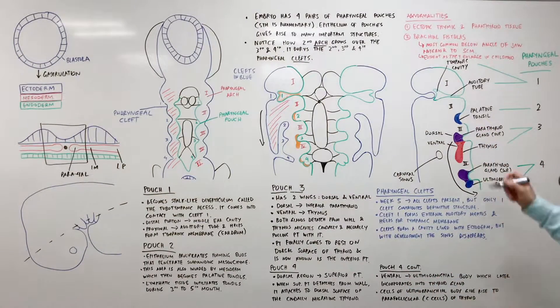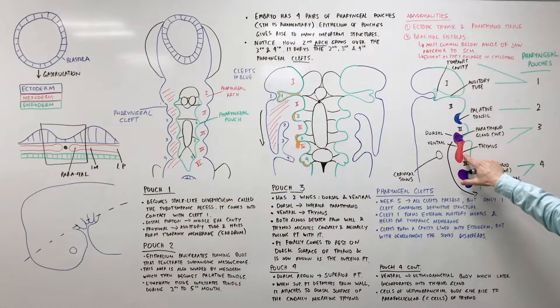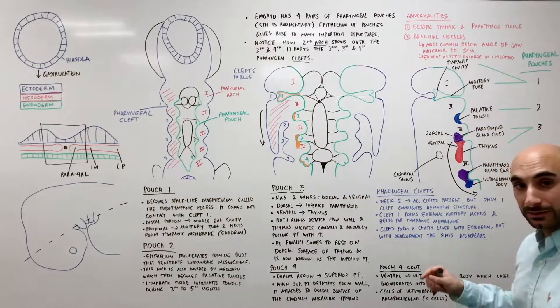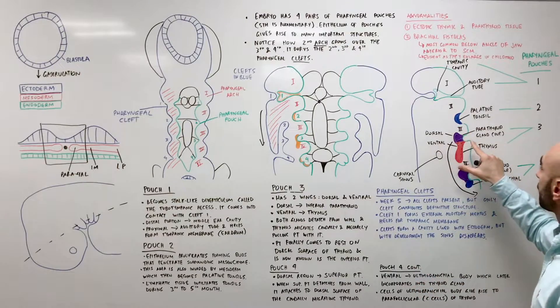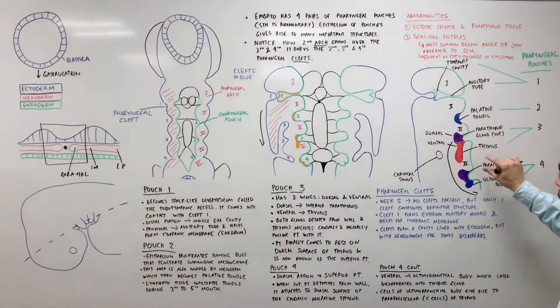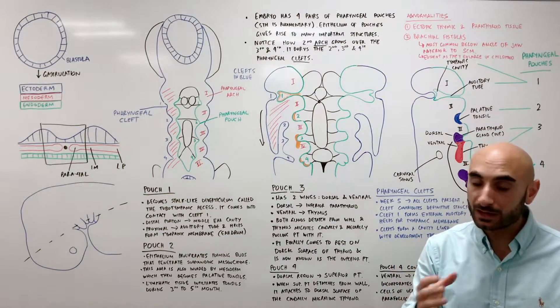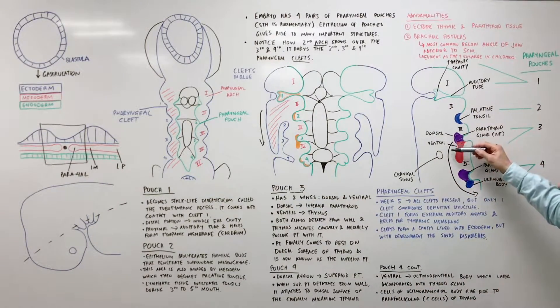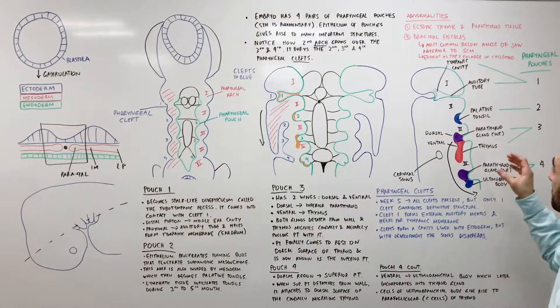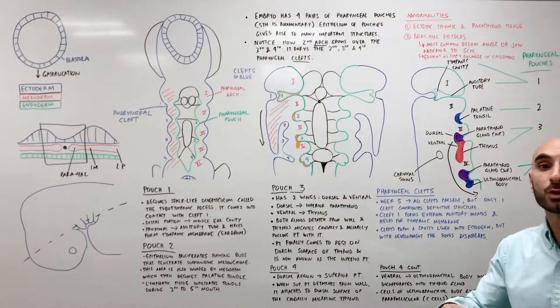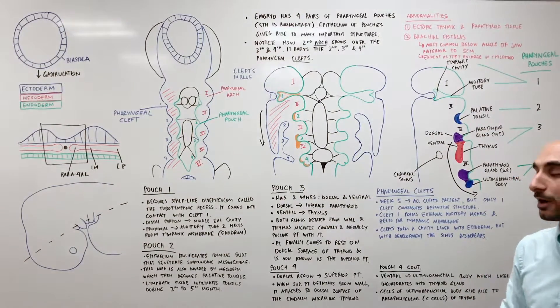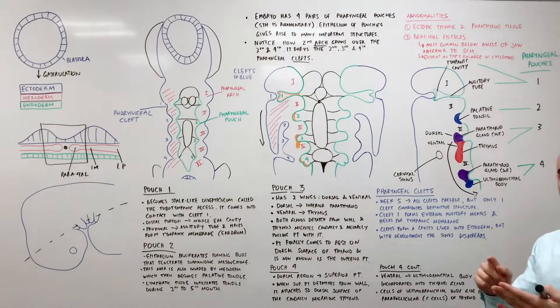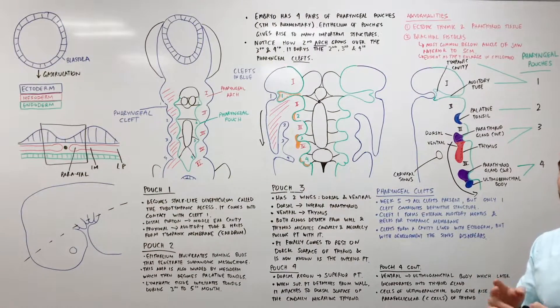So it's coming down, moving in this direction and this ventral wing will fuse with the other side of the ventral wing to form the thymus. And the parathyroid gland will also detach and will eventually fuse on the back of the thyroid in most cases. You'll notice that it has a lot of migration to do and that's why the location of the inferior parathyroid gland is much more variable than the superior parathyroid gland. Again, pouch 3 becomes the inferior parathyroid gland and the thymus, that's it.